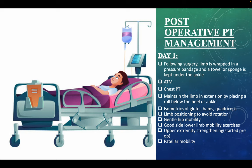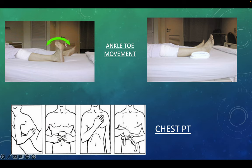Post-operative PT management — Day 1: the limb is wrapped in a pressure bandage and a towel or sponge is kept under the ankle. Ankle-toe movements (ATM) are performed. Chest physiotherapy is done. The limb is maintained in extension with a roll under the heel. Isometrics of the gluteals, hamstrings, and quadriceps are performed. Limb positioning to avoid rotation, gentle hip mobility, patella mobility, good-side lower limb mobility exercises, and upper extremity strengthening are also started.